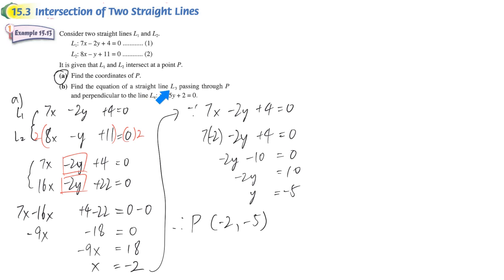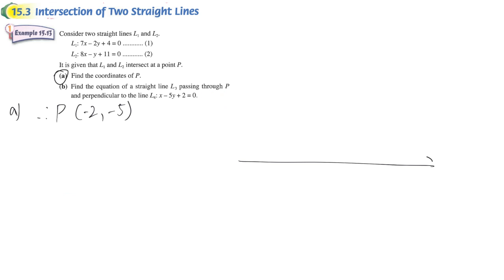In part B, they say there is another straight line that passes through P and perpendicular to L4. So it's no longer related to L1 and L2. You don't need to sketch a graph related to them. We just focus on this. What they say pass through P means in the graph, point P is approximate here, pass through this point.